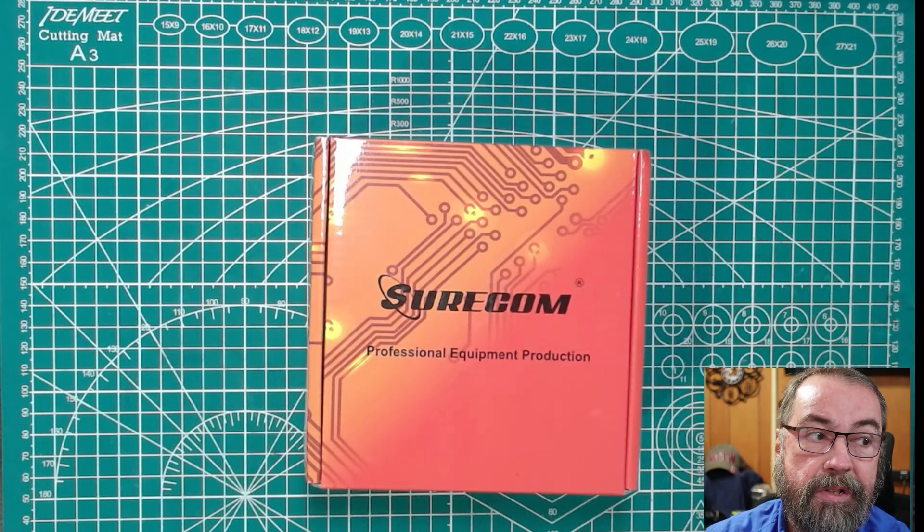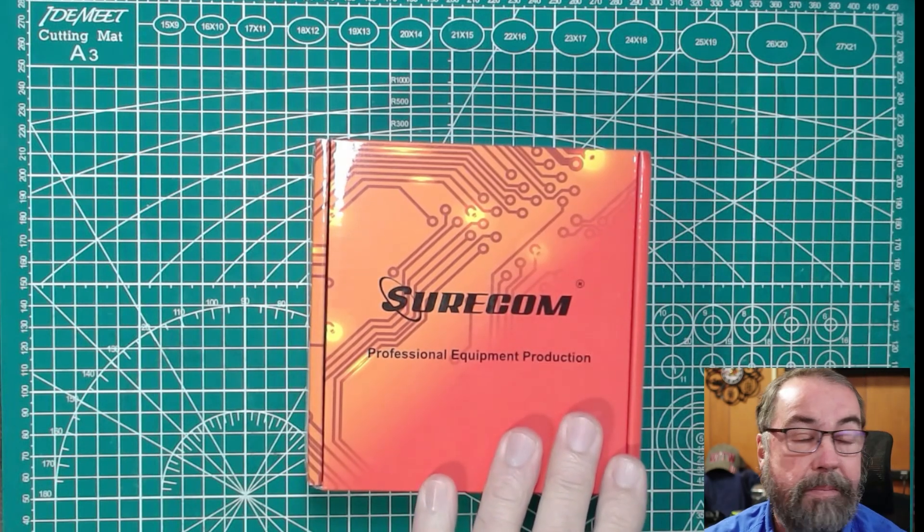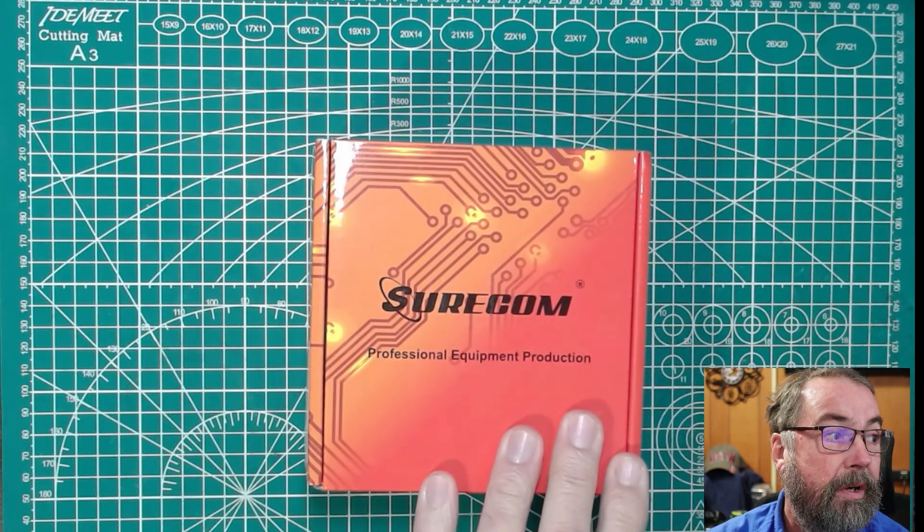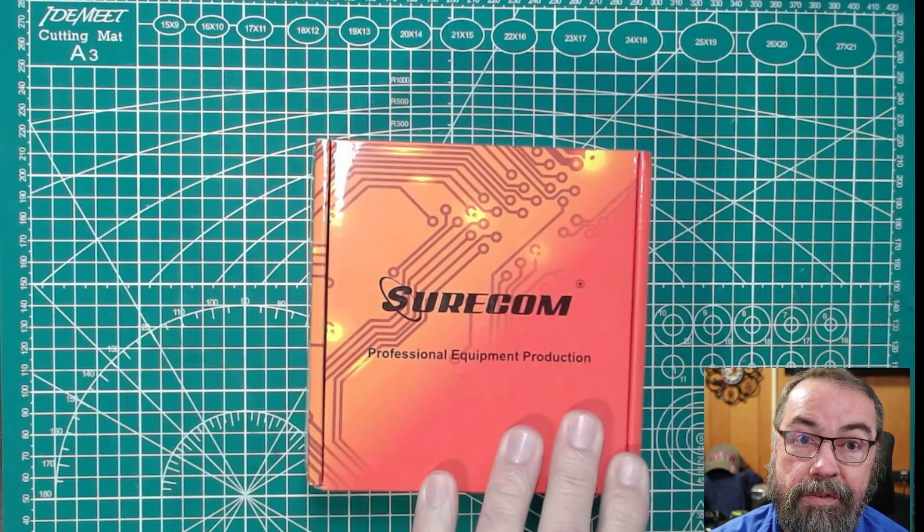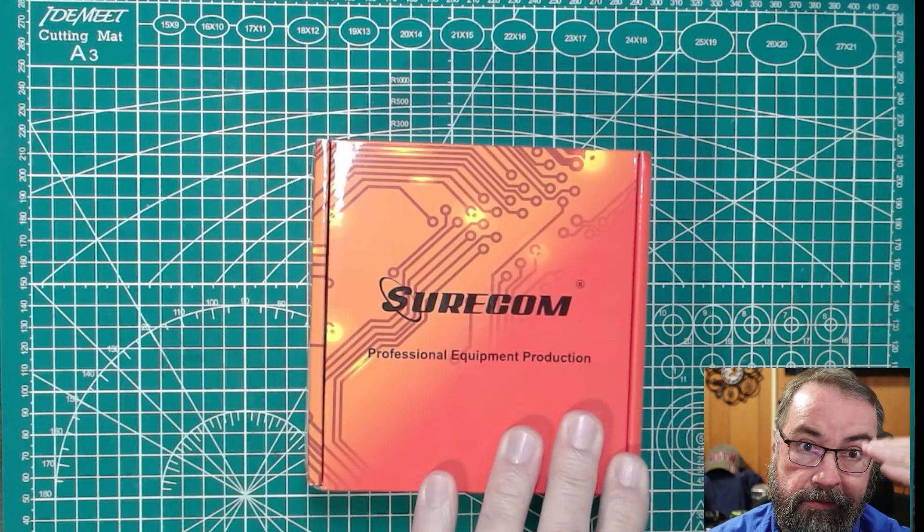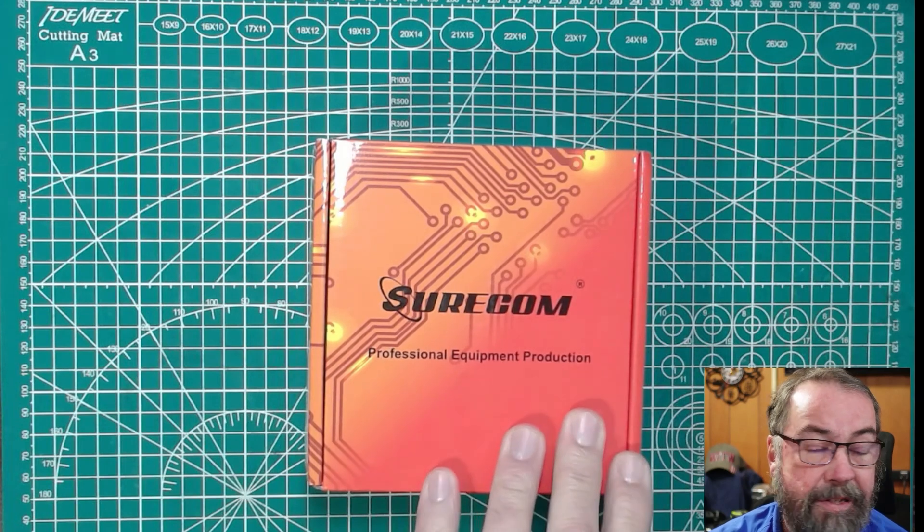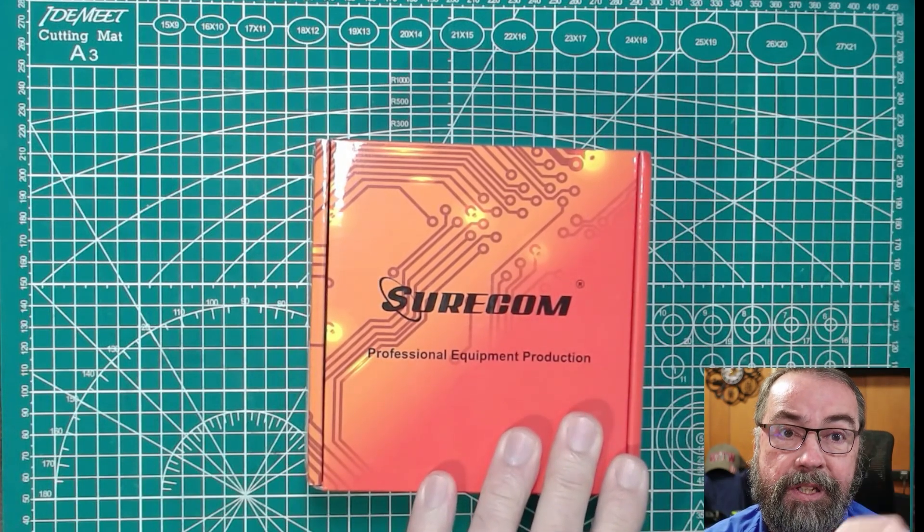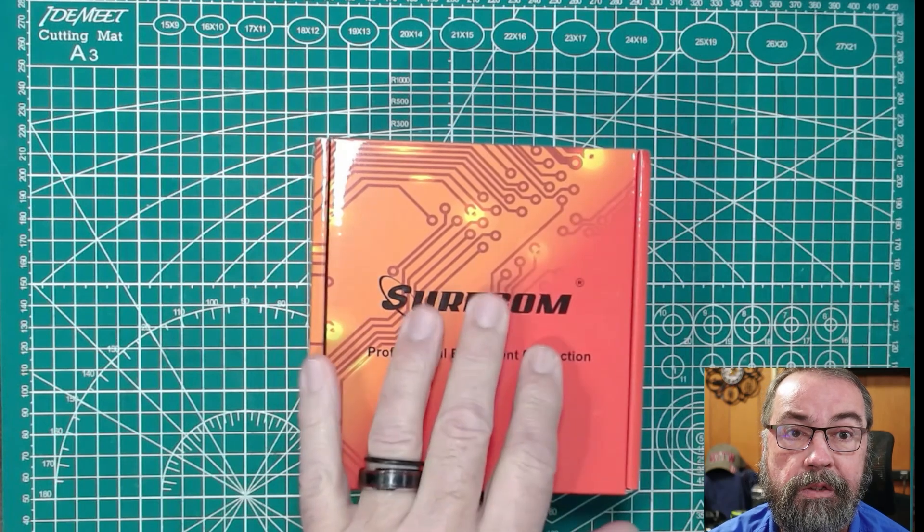This is off of Amazon. This is a SureCom S10 field strength meter. This is rated for 100 kilohertz to 3 gigahertz of RF frequency. And the device runs about $32, and I'll have a link, an Amazon affiliate link in the description below for this particular device.